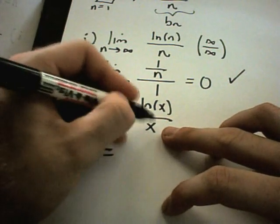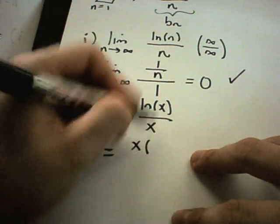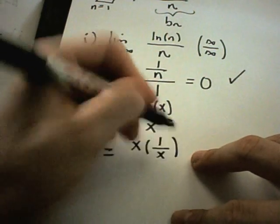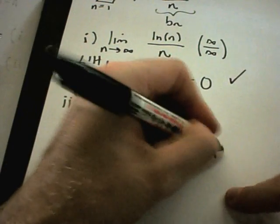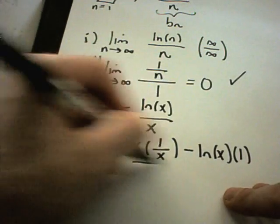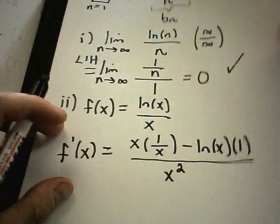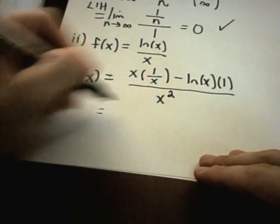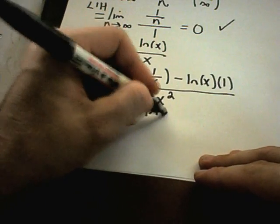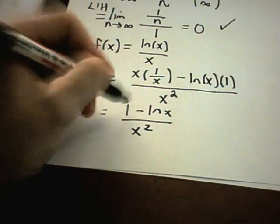So it says you leave the bottom alone. You take the derivative of the top, which is 1 over x, minus the top, times the derivative of the bottom, all over the bottom part, squared. So the numerator, I'm going to get 1 minus ln of x. And then I'm going to get x squared on the bottom.